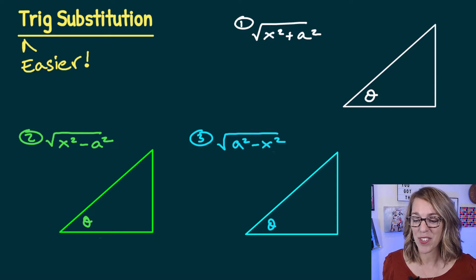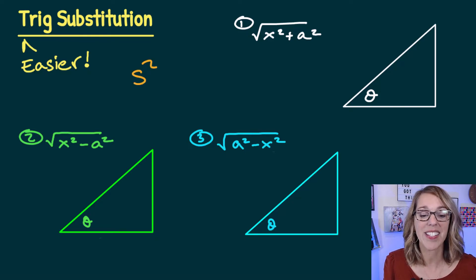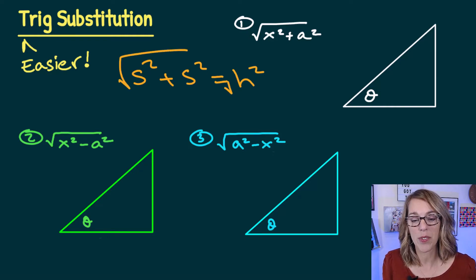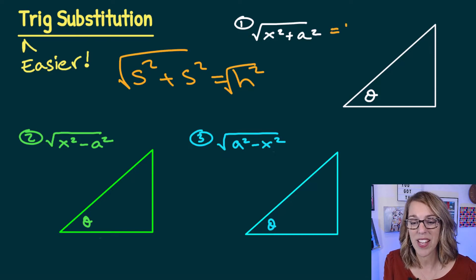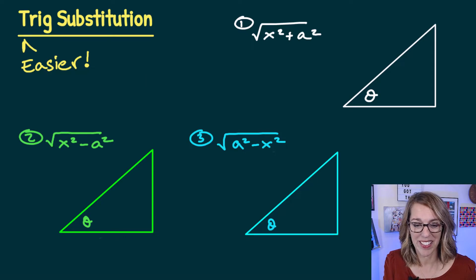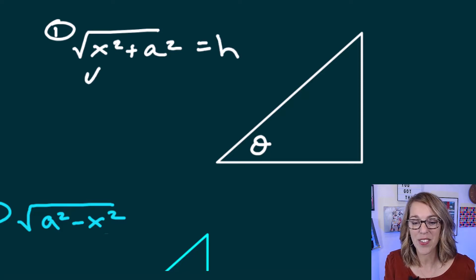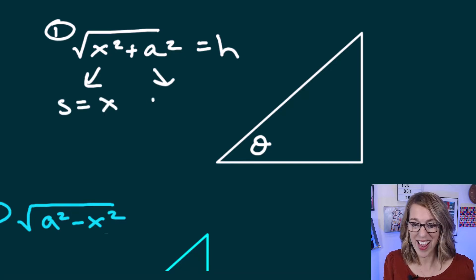This is all rooted in the Pythagorean theorem: one side squared plus the other side squared equals the hypotenuse squared. So if I've got the square root of a sum, like in number one, this represents our hypotenuse. Let's label the first triangle — one side has length x and the other side has length a.